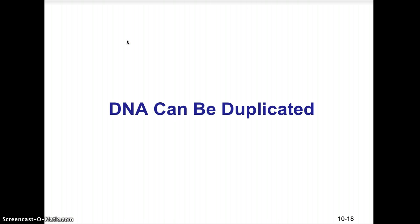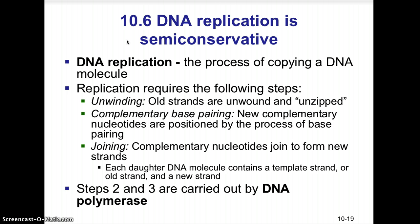DNA can be duplicated, and this happens during the S phase of interphase of the cell cycle, where the DNA must first replicate itself to ensure that each new cell gets a copy. DNA replication is a process that builds a new molecule that is semi-conservative — each new daughter DNA molecule has an old strand from the parental DNA and a newly replicated strand. That's what semi-conservative means.